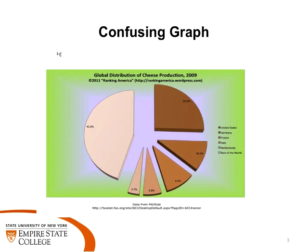Hi, I'm Alexandria. This graph shows the amount of cheese produced around the world. The United States produces about 25% of the world's cheese, and it breaks down — as you can see with the color coding on the sides — how much other places in the world are producing cheese.